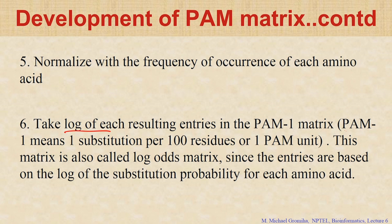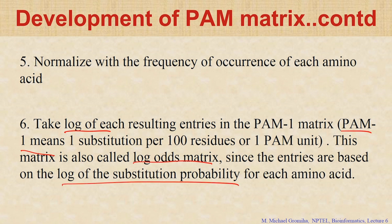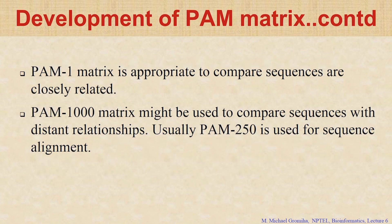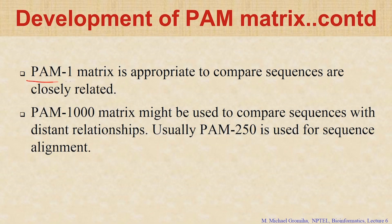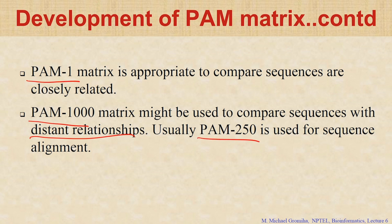We have different matrices. For example, PAM 1 means 1 substitution per 100 residues — this is called the PAM 1 matrix. It is also called a log-odds matrix because the entries are based on the log of the substitution probability. PAM 1 compares sequences which are closely related — highly homologous sequences. PAM 1000 is mainly for distant relationships. Normally you can use PAM 250, which is the usual one used for general alignment of two sequences.